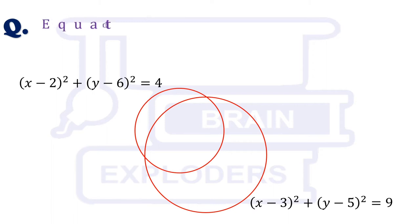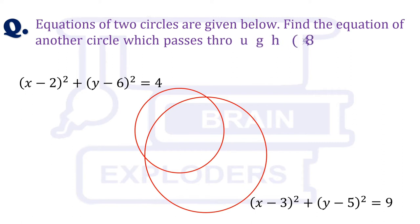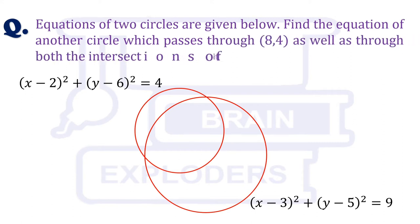Equations of two circles are given below. Find the equation of another circle which passes through a given point as well as through both the intersections of the given circles.